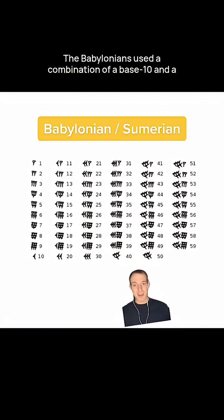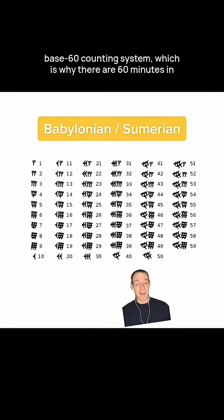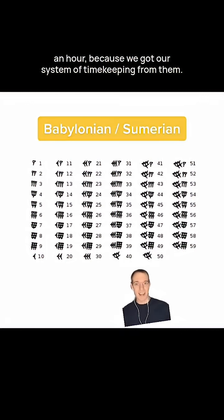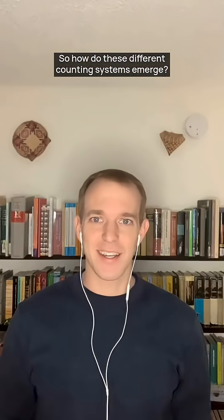The Babylonians used a combination of a base 10 and a base 60 counting system, which is why there are 60 minutes in an hour, because we got our system of timekeeping from them.